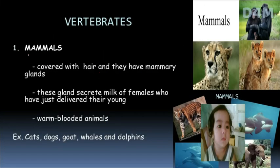The first group in vertebrates is mammals. They are backbone animals. They are covered with hair on their body. They have mammary glands. Mammary glands produce milk — these glands secrete milk for females who have just delivered offspring.